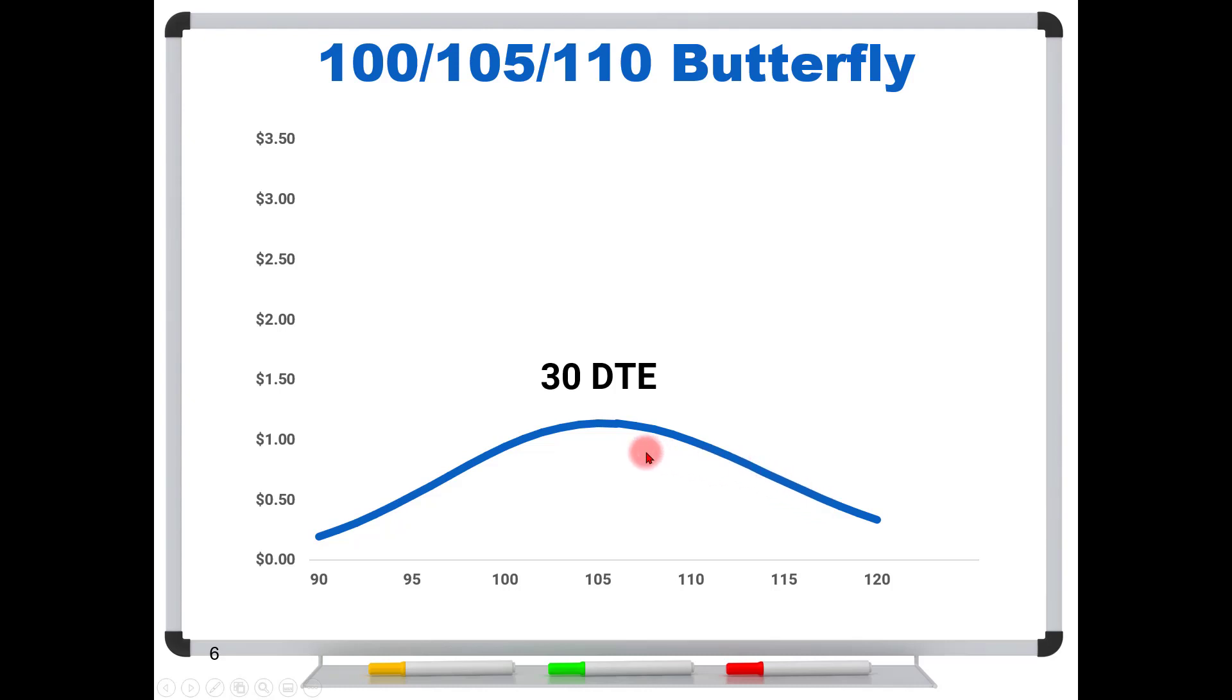So this is why when you first put your position on, let's say with a month to go, it might have a fairly gentle kind of a rolling slope to it. I mean, yeah, your P&L is going to change, but it's not going to change radically. That's because this is still a fairly flat curve.